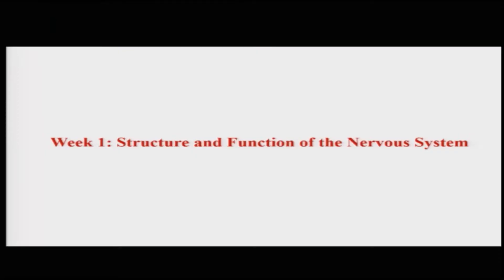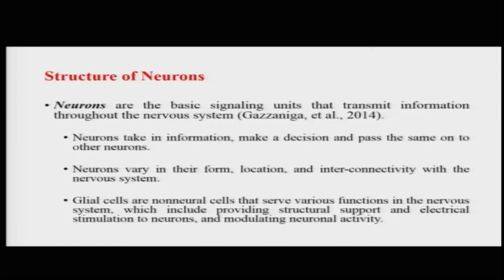From today's lecture onwards, we will start talking in detail about the structure and function of how the nervous system is organized. The first lecture in this series is the third lecture of the week and it will talk about neurons. Neurons are these basic signaling units or simple cells that combine to form the brain, and we will talk about them as signaling units that transmit information throughout the nervous system.